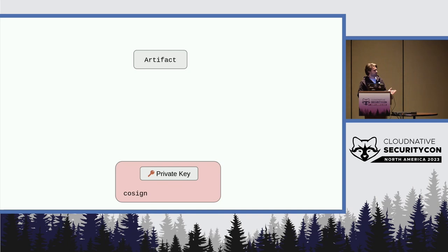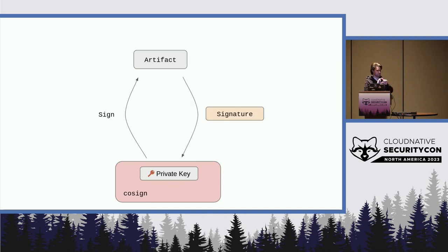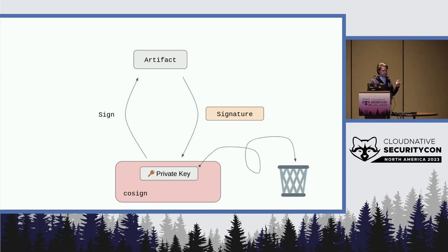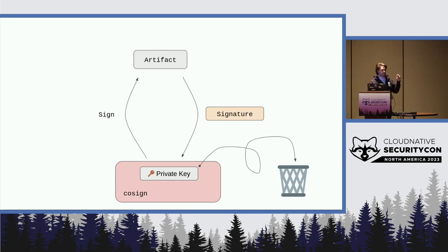We have our private key, we sign our artifact with it, and that gives us the signature. Then we chuck the private key in the garbage — nothing more to add to our list there. The only design requirement here is that we're on the clock since the certificate expires soon, so we better sign quickly.